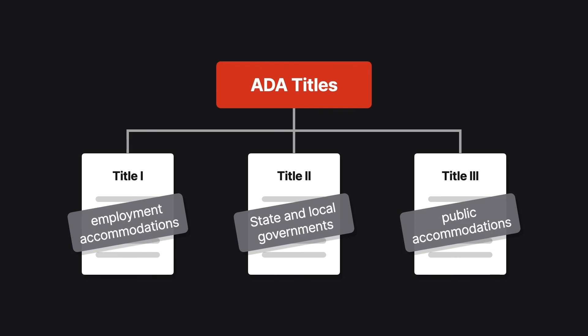Title II covers all activities of state and local governments, and it provides that those public entities not discriminate against people with disabilities in the provision of a public entity's services, programs, or activities. Title III covers public accommodations — private entities who own, lease, lease to, or operate facilities, such as restaurants, retail services, hotels, movie theaters, schools, convention centers, doctor's offices, homeless shelters, and transportation depots. Public accommodations must comply with basic non-discrimination requirements that prohibit exclusion, segregation, and unequal treatment of disabled individuals.